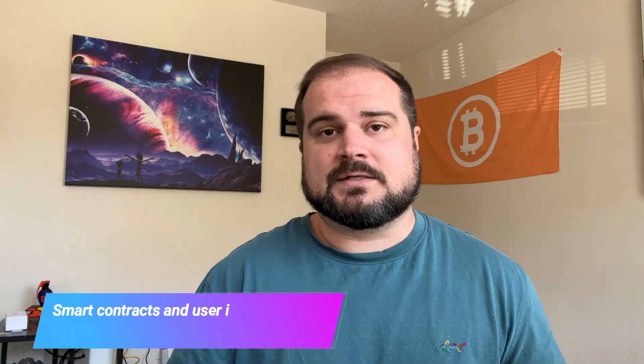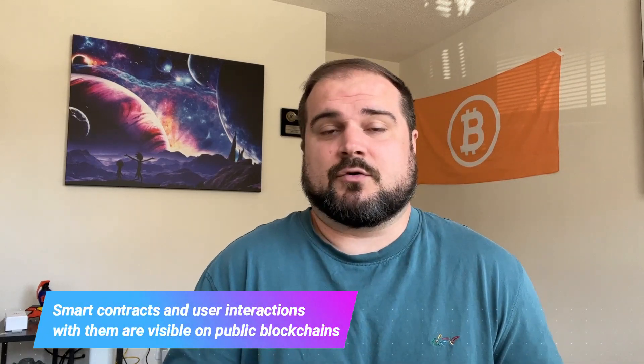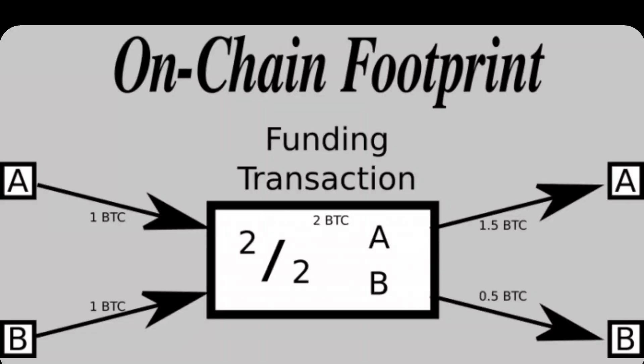Ethereum did and is facing high fees as a result. And of course, that's why there are layer two scaling efforts like Polygon and others. But you also have a lot of privacy-related considerations. Smart contracts are essentially just computer programs on a blockchain, so the contract itself is visible, as well as the interactions of users with that contract, and that leaves a lot to be desired from a privacy standpoint. DLCs essentially happen off-chain, and so the only on-chain footprint of a DLC is the initial funding and then ultimately the execution of those funds.